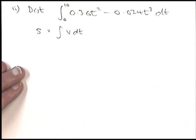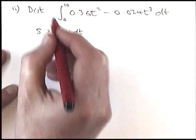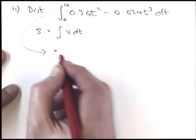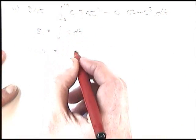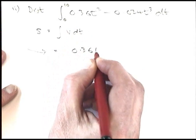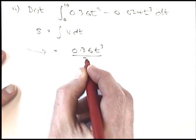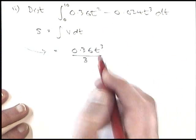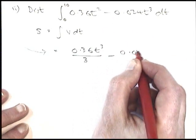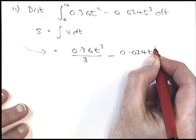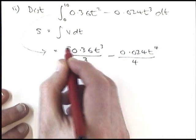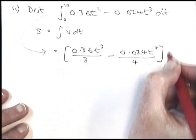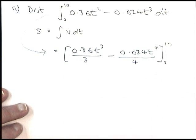When you integrate, you increase the power and you divide. So from that line, if I come through here, the 0.36t squared becomes t cubed, and I divide by the new power. I've added 1 to that power. Over here, instead of t cubed, I add 1 to the power, t to the 4th, that 4 comes down here, and I'm integrating that between 10 and 0.